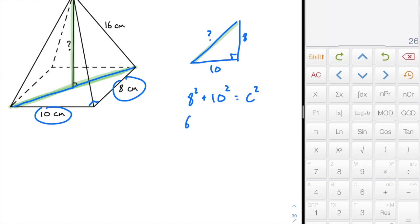So 8 squared and 10 squared equals C squared. 64 and 100 is C squared. 164 is C squared. So the square root of 164 is 12.81 is approximately equal to C. So we have that.